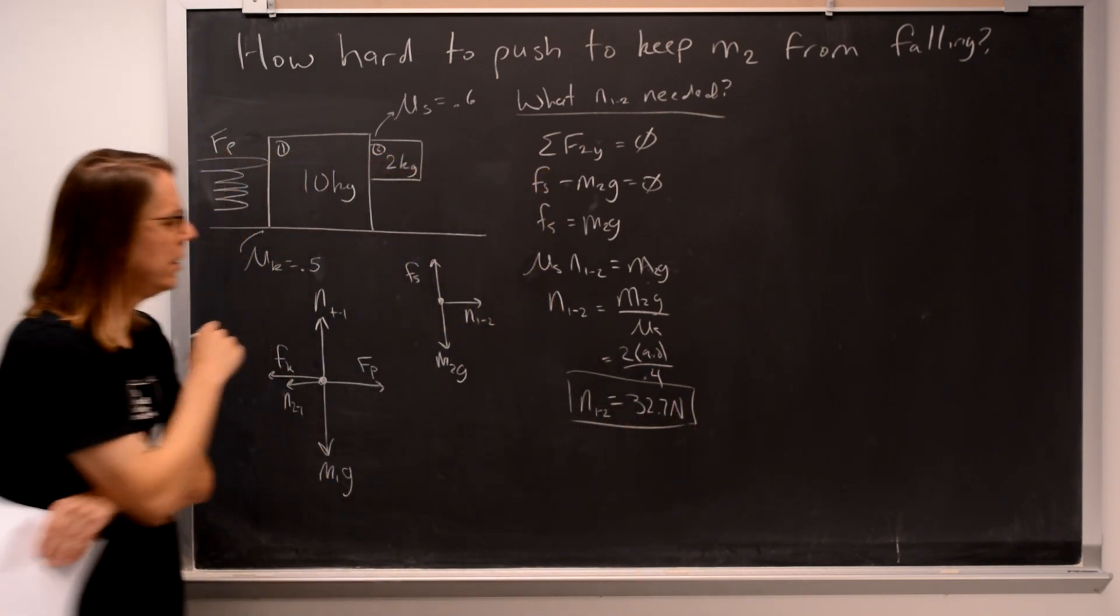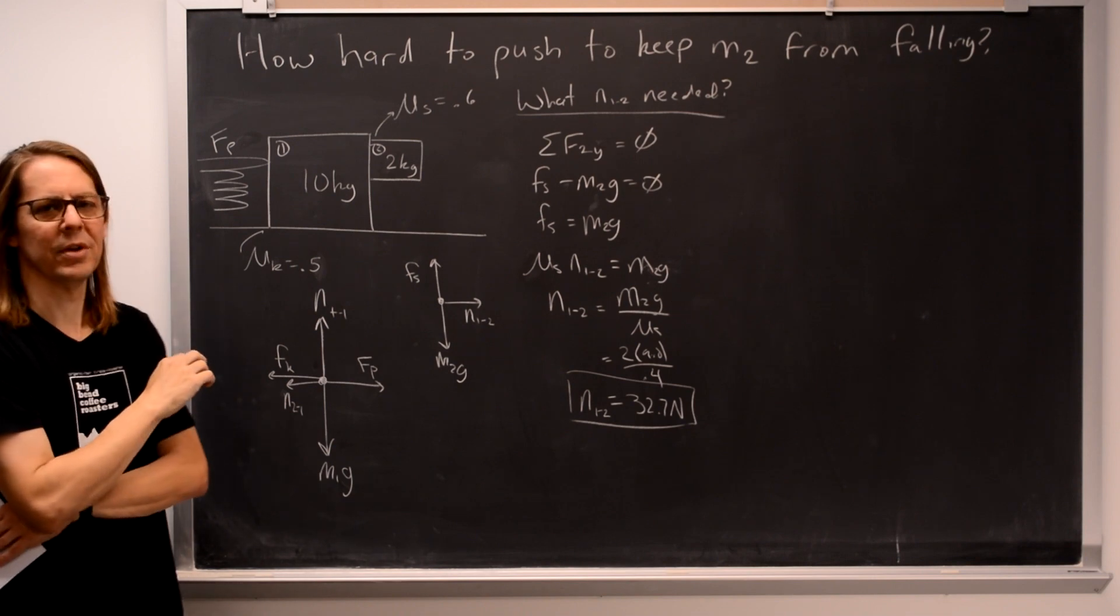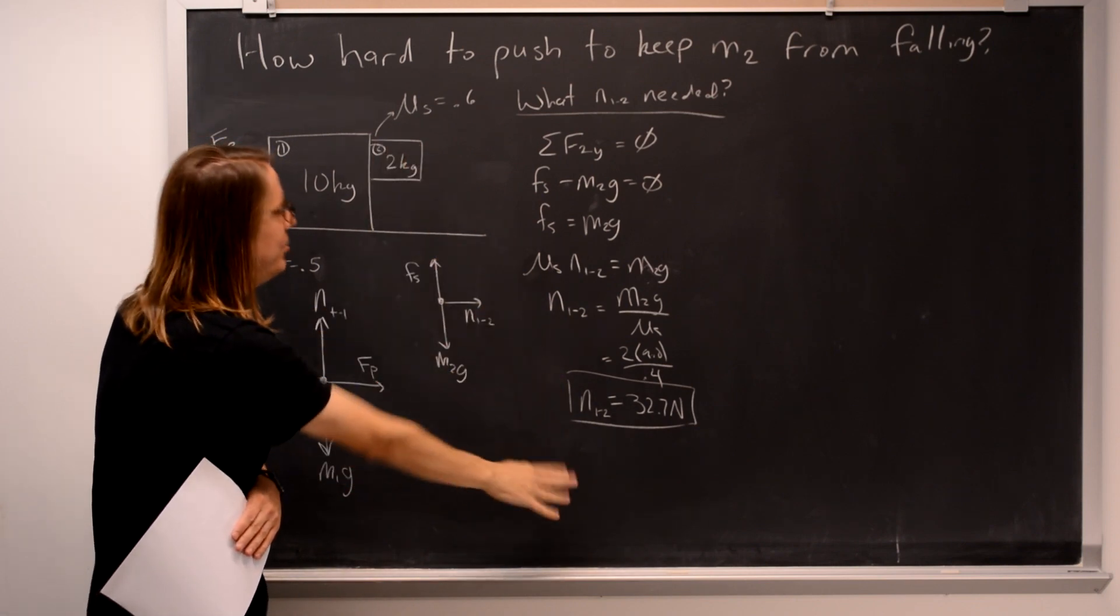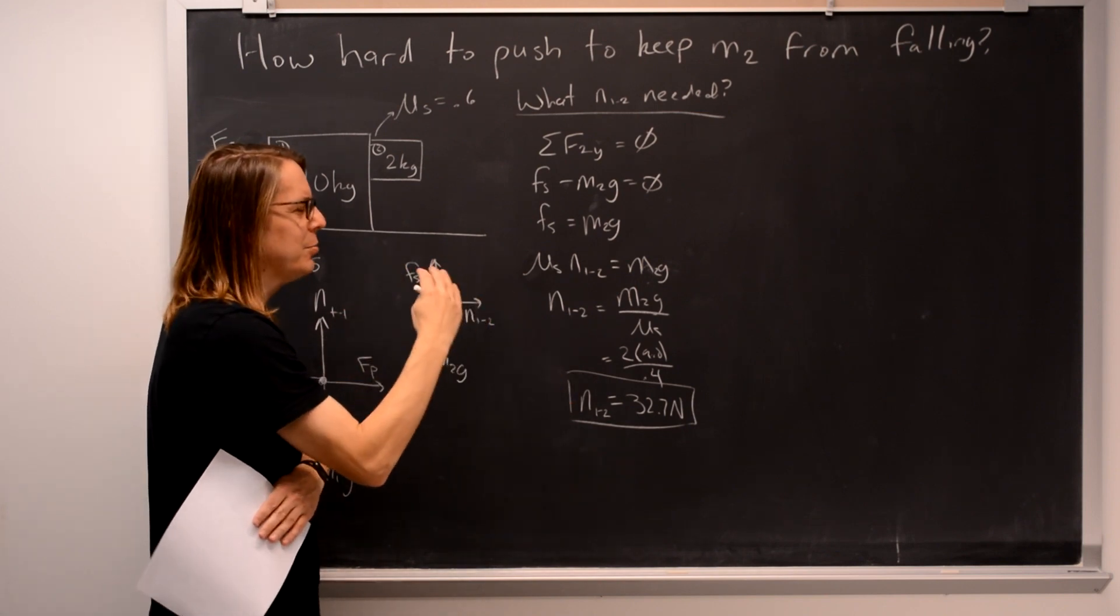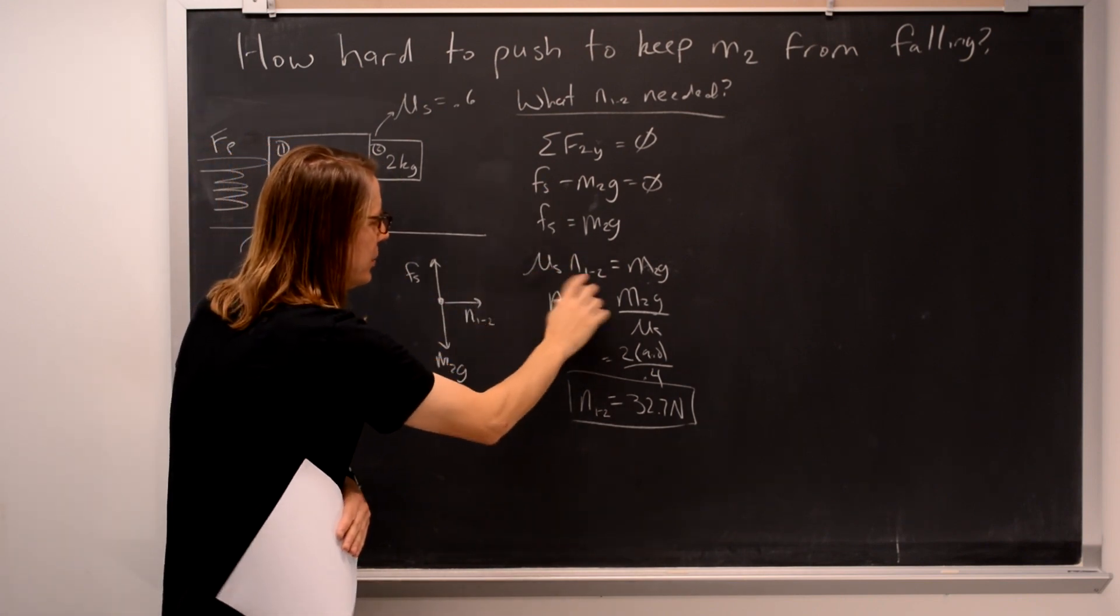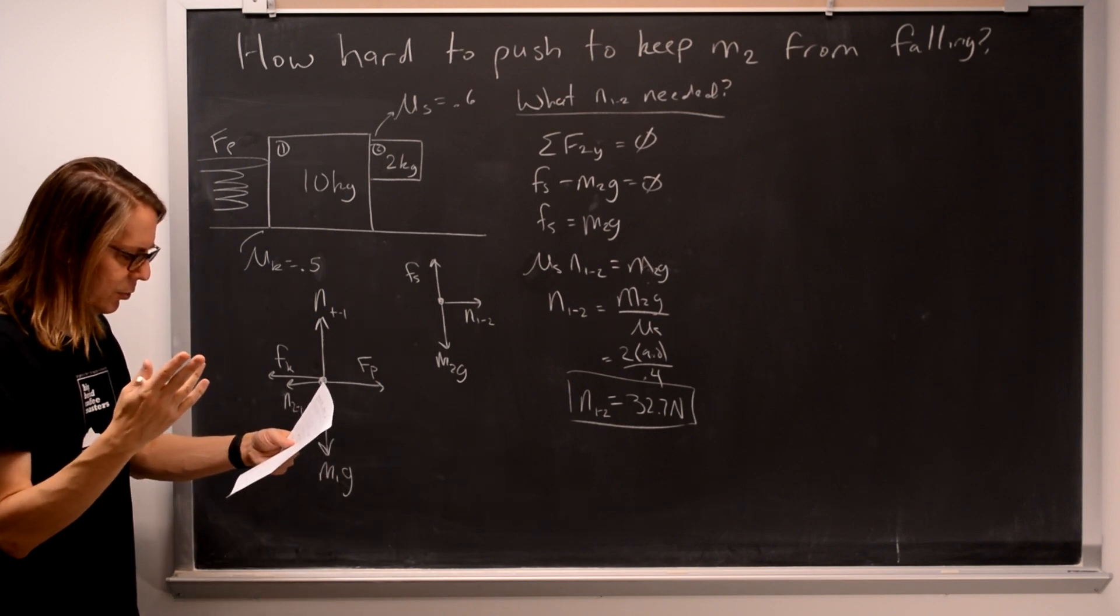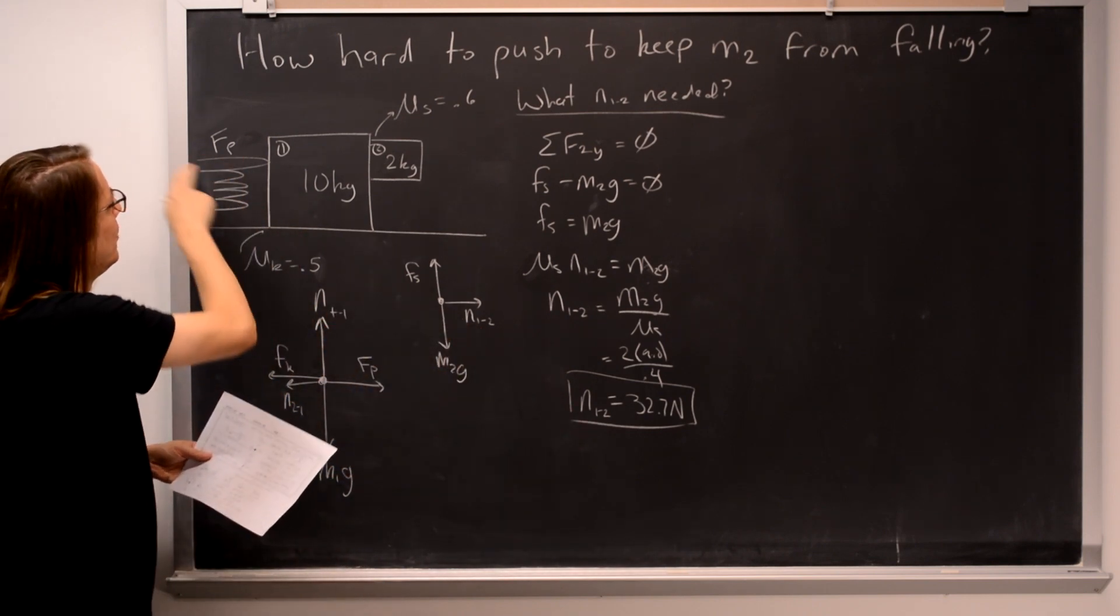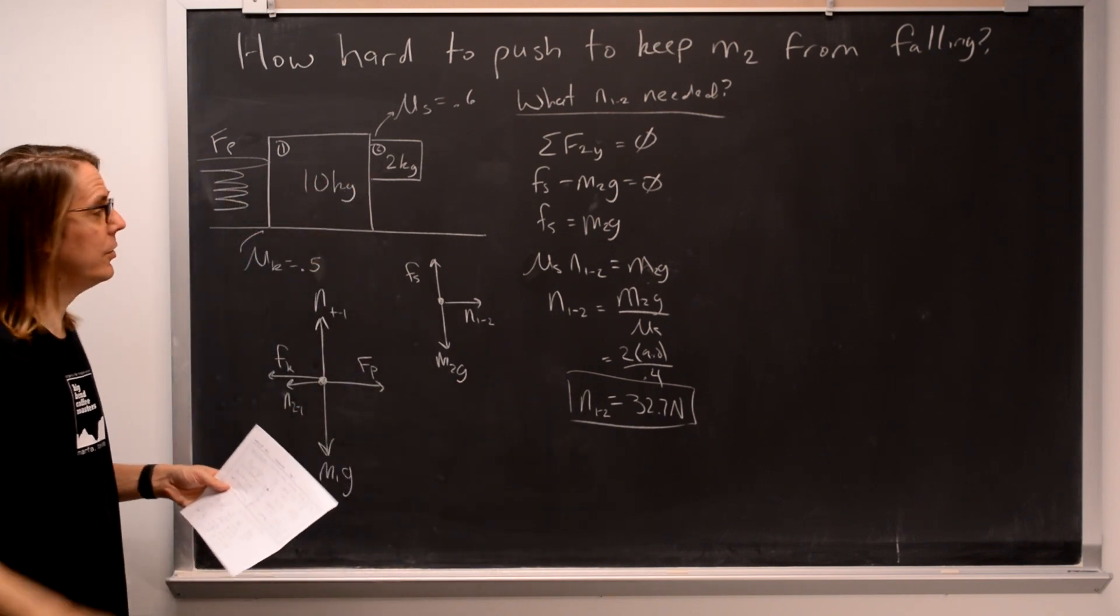So we know, just based on how this one's going to behave, that it must be pushed at 32.7 newtons. If it pushed that hard, that allows the static friction to be big enough to counteract its weight. If you pushed softer, then the maximum static friction you could get wouldn't be enough to counteract its weight. That's why we just called this equal. That's why we took the maximum value. So that's the force that we need. And now what I would do is bring that over here, because now we want to figure out what push force results in that normal force between 1 and 2.